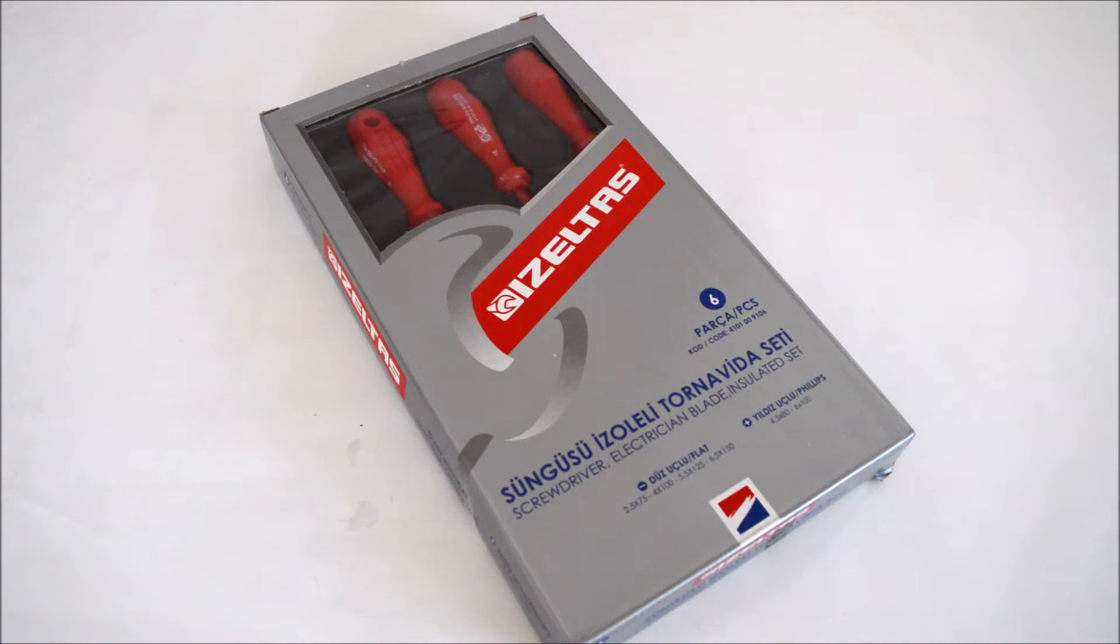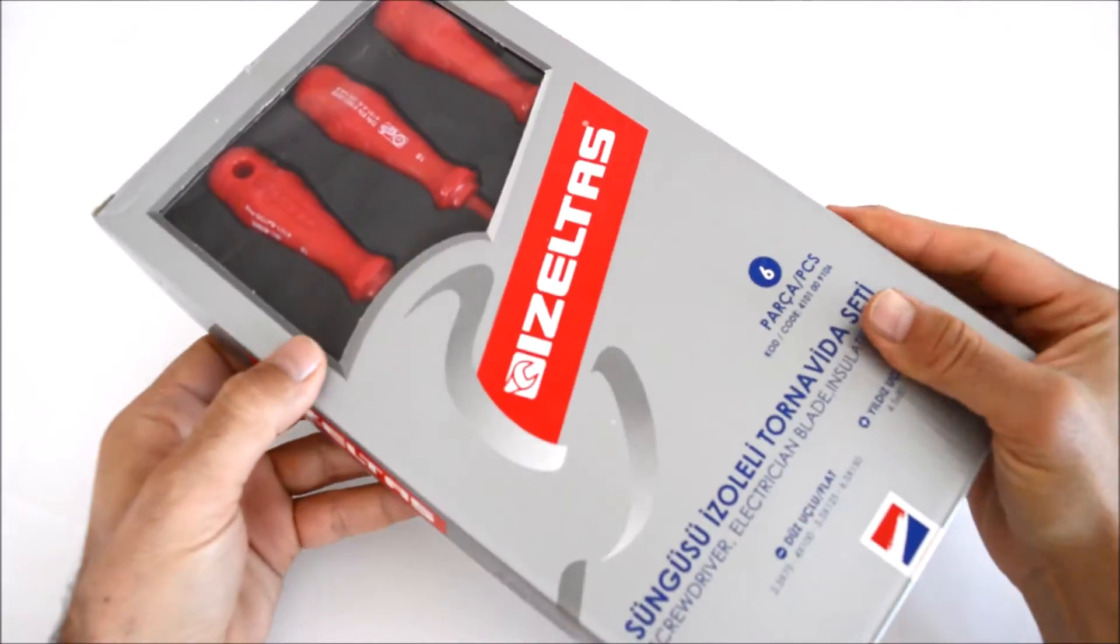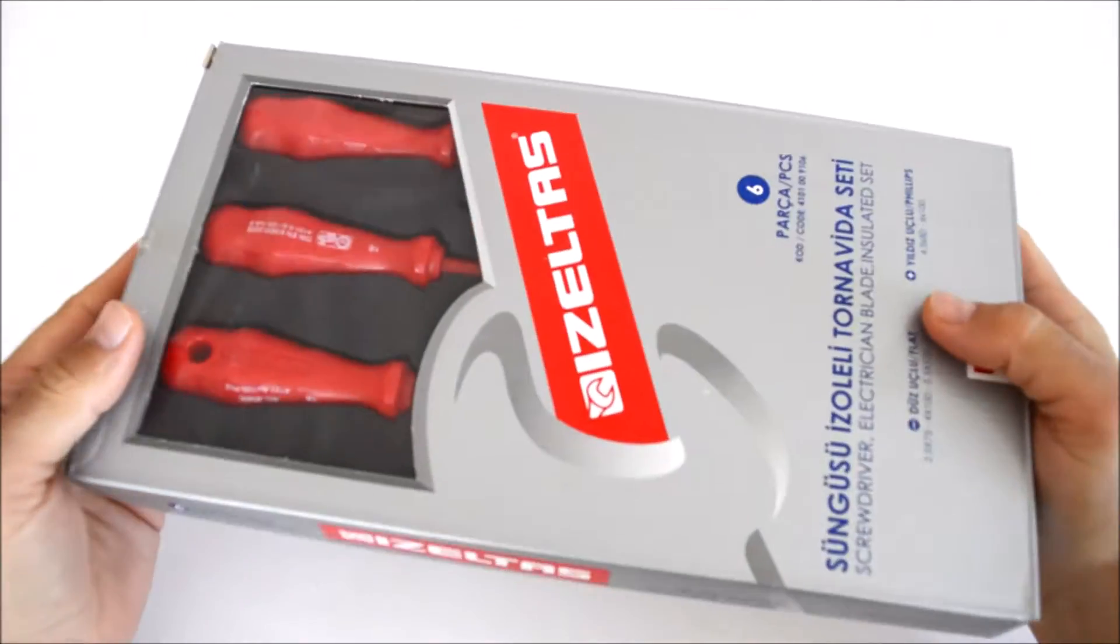Bugün elimizde İzeltaş sürgüsü izole bir tornavida seti var. Bu setin içerisinde 4 adet değişik ebatlarda düz tornavida ve 2 adet yıldız tornavida mevcut.